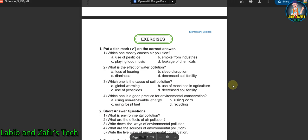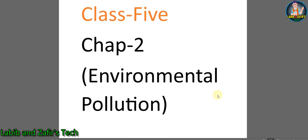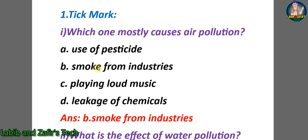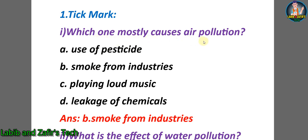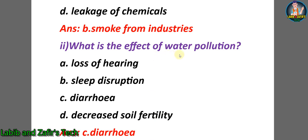Now let's go through the exercises of Elementary Science Class 5, Chapter 2: Environmental Pollution. First, tick mark question number one: which one mostly causes air pollution? A) use of pesticides, B) smoke from industries, C) playing loud music, D) leakage of chemicals. The answer is B) smoke from industries. Second question: what is the effect of water pollution? A) loss of hearing, B) sleep disruption, C) diarrhea, D) decreased soil fertility. The answer is C) diarrhea.